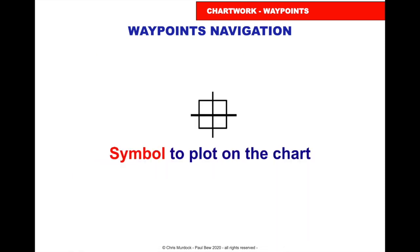When we plot a waypoint on the chart, it will look like this, which is a cross with a square around it, so anybody looking at that chart will know that that is a waypoint position.